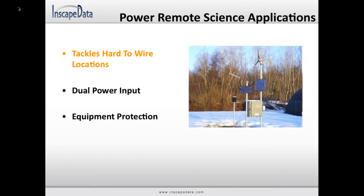Remote scientific stations often require instruments to be installed in hard-to-wire locations. The dual power input allows for 48 volt DC or 100 volt AC to 240 volt AC power input for flexible main power requirements such as solar, battery, or generator power input. Industrial PoE surge protection with 5 nanosecond response times and 132A of current sinking capacity ensures optimal protection of remote scientific equipment against damaging transient surges.